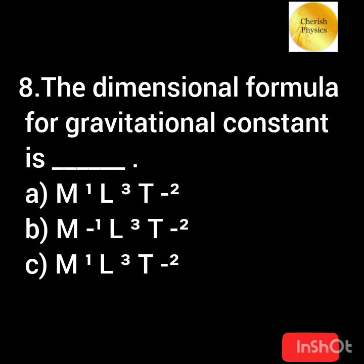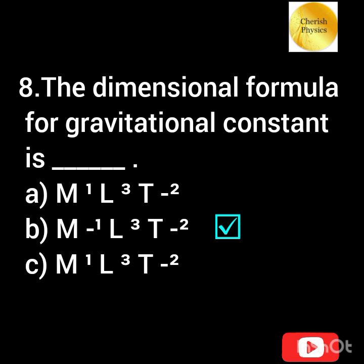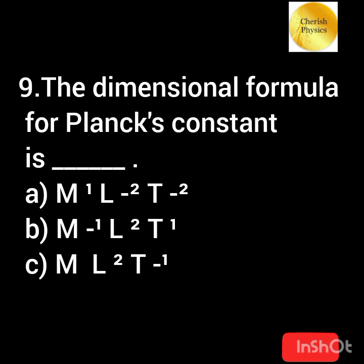The dimensional formula for gravitational constant is — The dimensional formula for Planck's constant is —